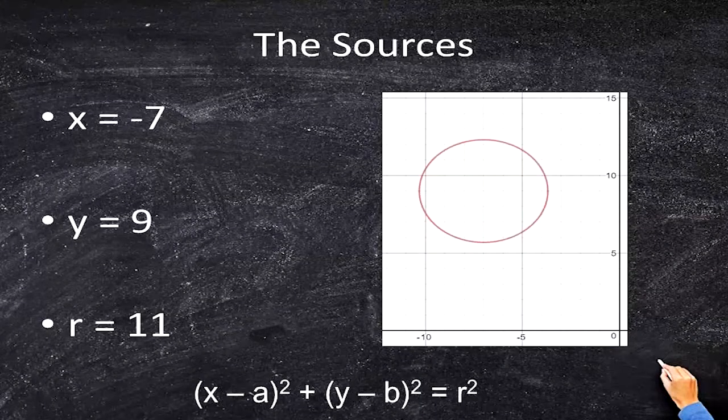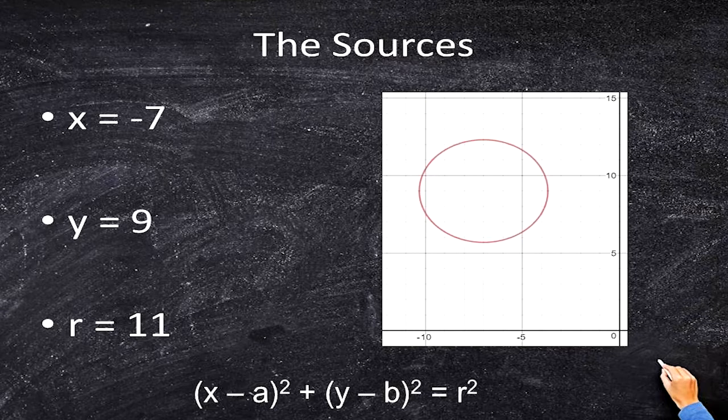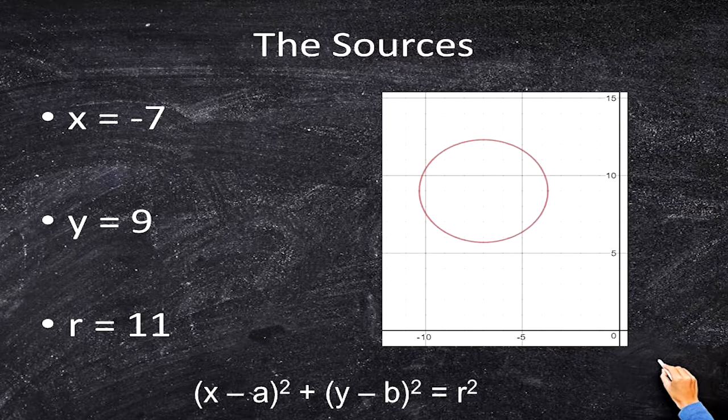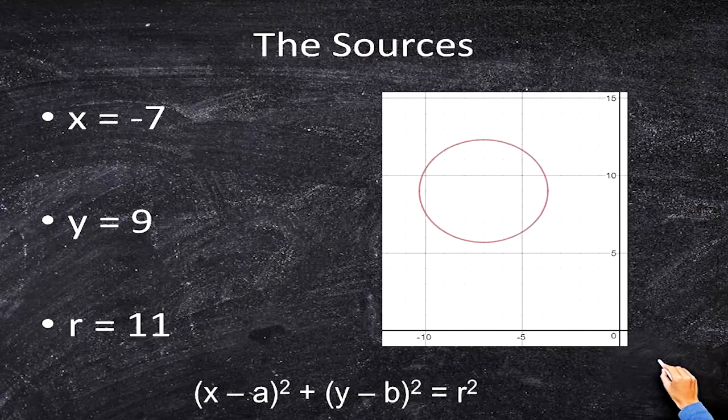The way you solve this is you use the equation of a circle: x minus a squared plus y minus b squared equals r squared. And you plug in negative 7 for a, 9 for b, and r squared at the end, so 11 squared. But the equation of a circle with the answer key has all of our variables on the left side. So how do we do this problem?